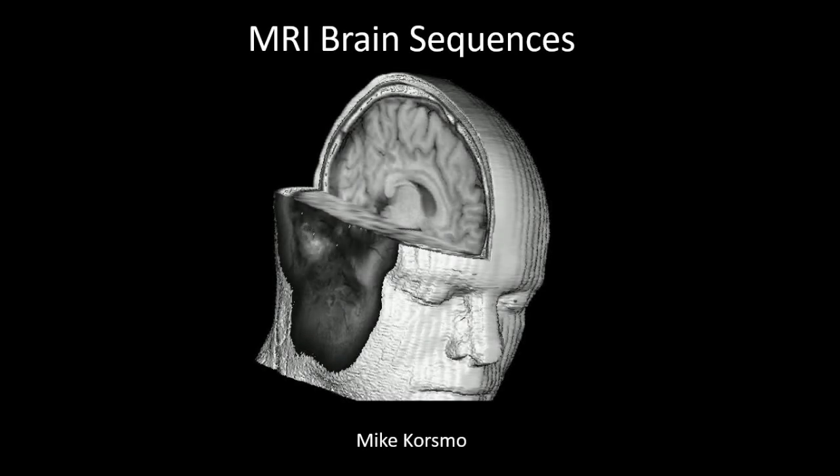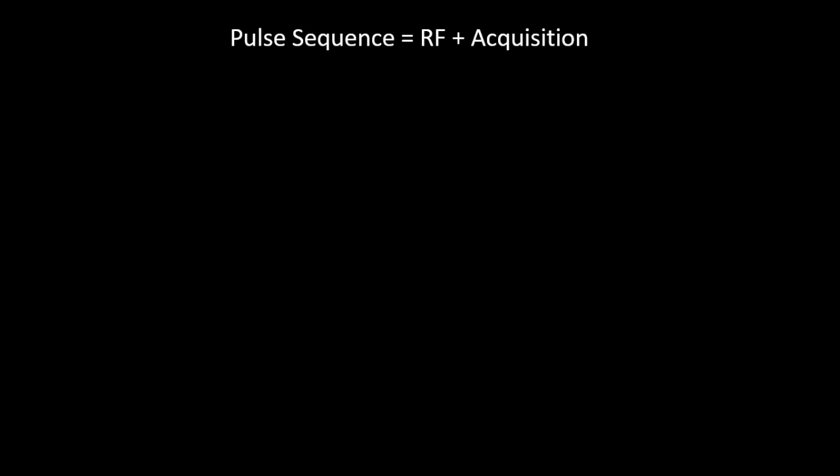Hello everyone, welcome back. Today we've got a brief talk on some of the major MRI brain sequences that are useful to neurologists and might be useful to you on your rotation if you're a medical student just starting. We're going to go over the major ones and the ones that can be a little bit confusing. We're not going to cover ones like BOLD imaging, perfusion, or MRA. Let's get started.